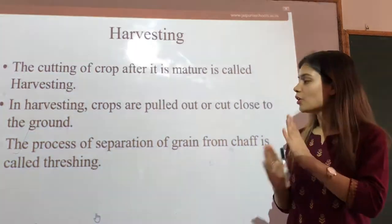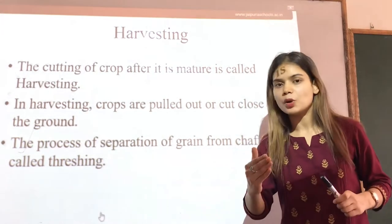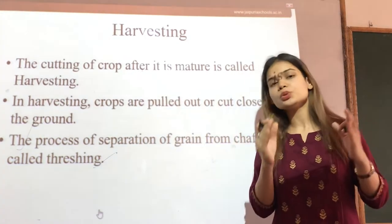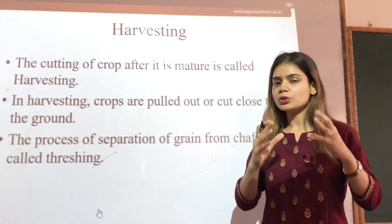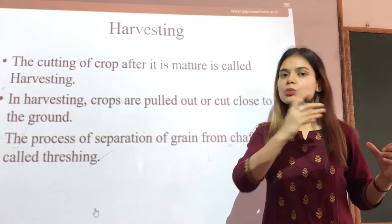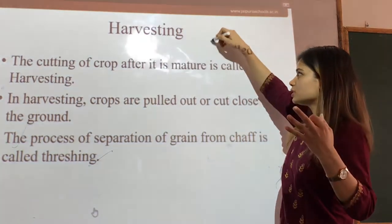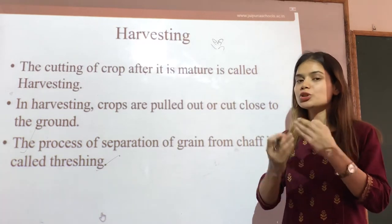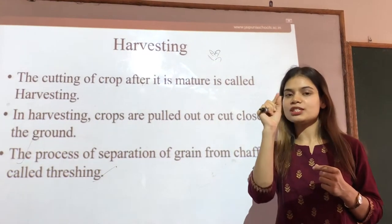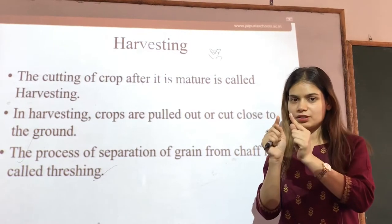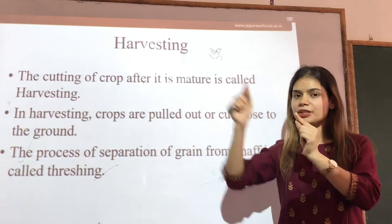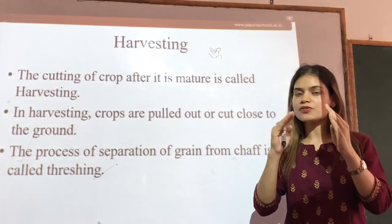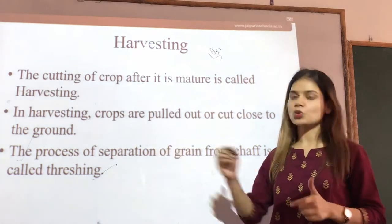Harvesting is always accompanied by another process — that is threshing. Once we have done the harvesting, we need to do threshing in many crops. What is threshing? It is the process of separating grains from chaff. Suppose this is a crop of wheat — if you have harvested the wheat crop, you need to separate those grains. Those grains need to be separated from the outer covering of leaves. That outer covering which encloses the grain is known as chaff or husk.